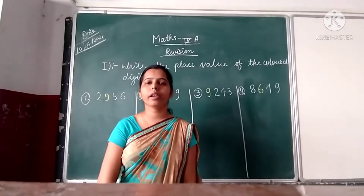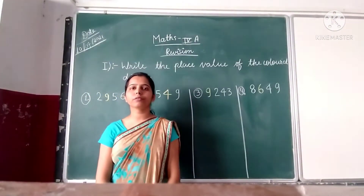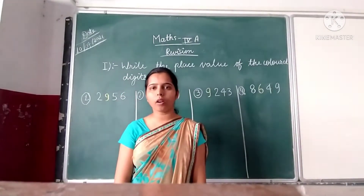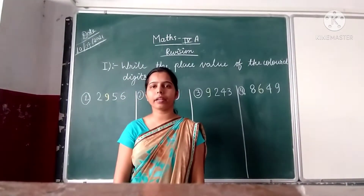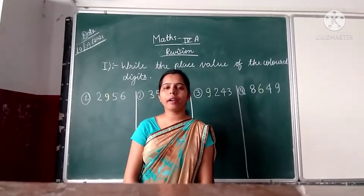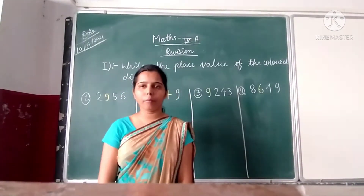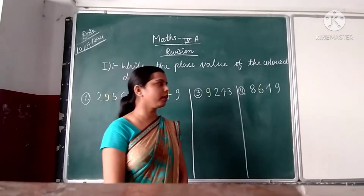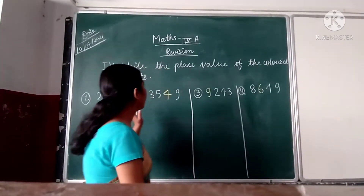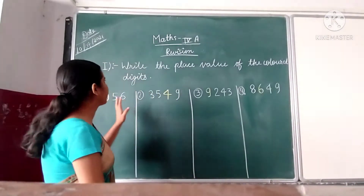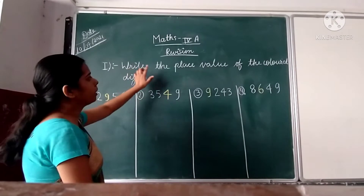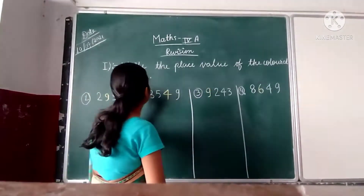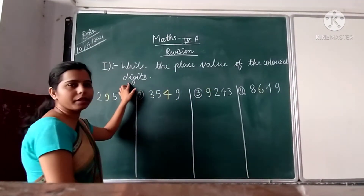Good morning students. In our last talk we discussed about ascending order and descending order and greater than and less than. Now our next topic is: write the place value of the colored digit.